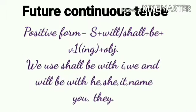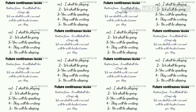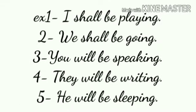Next, future continuous tense. Let's see the formula of future continuous tense in positive form. Subject plus will/shall plus be plus V1 with -ing plus object. We use 'shall be' with I and we, and 'will be' with he, she, it, name, you, they. Examples: I shall be playing. We shall be going. You will be speaking. They will be writing. He will be sleeping.